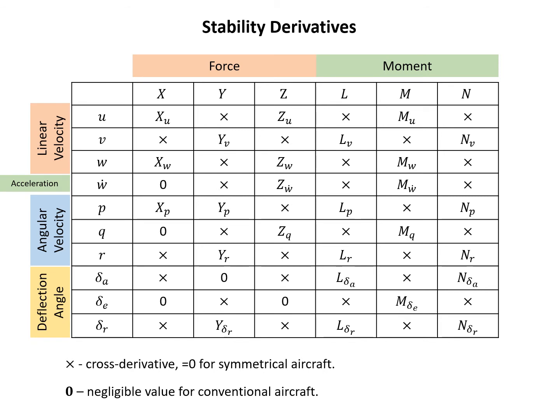For an example entry marked with an arrow, consider X and q: X is force along the x-axis, and q is the angular velocity along the y-axis — the pitching angular rate. Because a change in pitching rate won't produce any significant change in X, it becomes negligible, which is why it's marked zero.